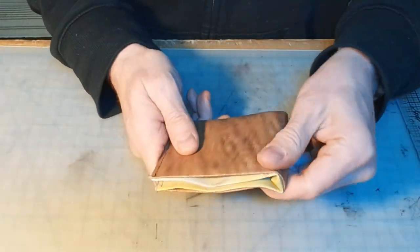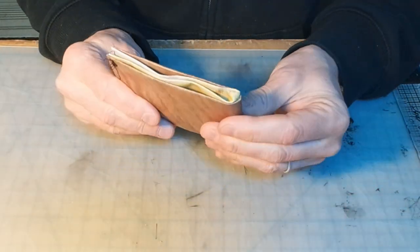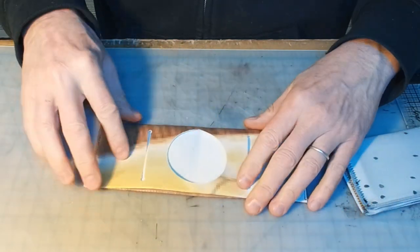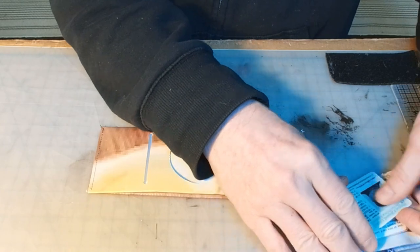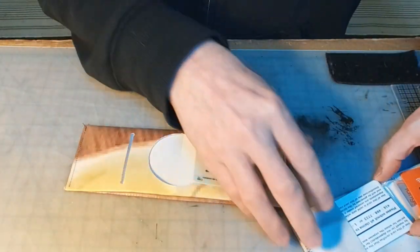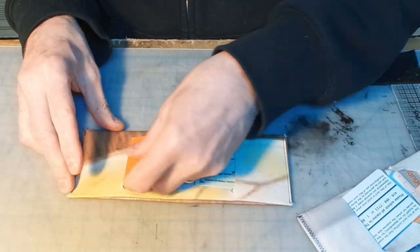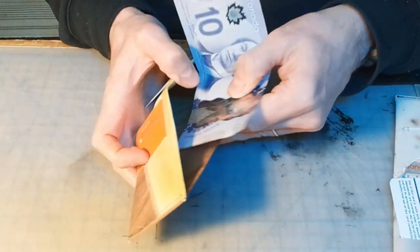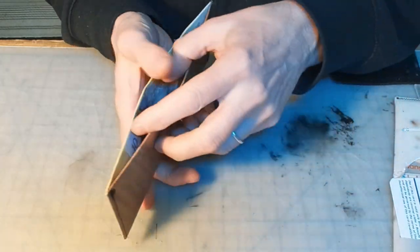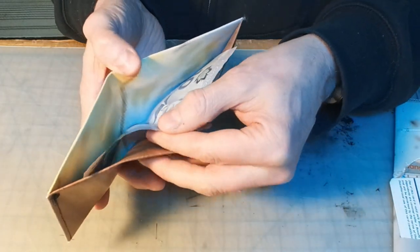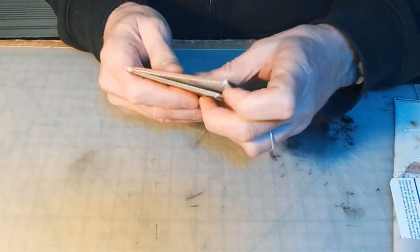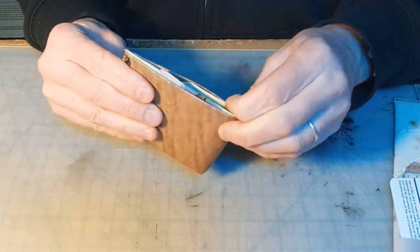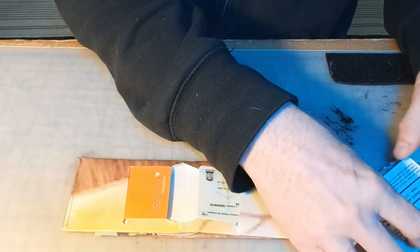And so, here we have it. A little wallet. With a space for cards and things. And money. And that will easily hold Canadian or American bills. If you're in the UK, the dimensions will be a little different. But it should still work.